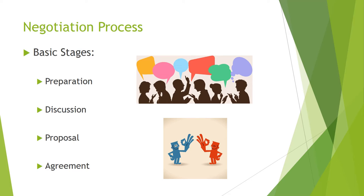The third stage is the proposal, which needs to be presented based on the existing needs of the presenter and revolves around a set of issues and alternatives that may be a threat or opportunity. And finally, the fourth stage is agreement, which comprises the accepted negotiation proposal that is in accordance with the norms of both the negotiating parties.